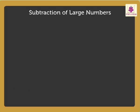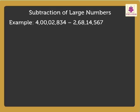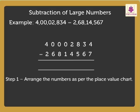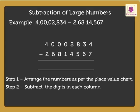Now let us learn how to subtract large numbers. For example, subtract 4,00,02,834 minus 2,68,14,567. To subtract large numbers, we follow the same steps as we do for small numbers. Step 1: Arrange the numbers as per the place value chart. Step 2: Subtract the digits in each column, starting from the ones place. Step 3: Regroup if required.